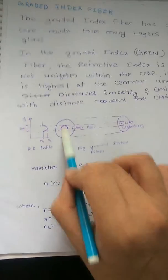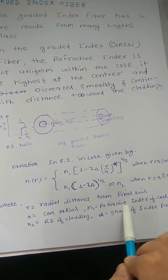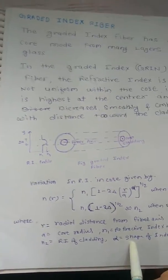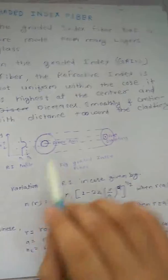n1 is the refractive index of core. n2 is the refractive index of cladding, and alpha is the shape of the index profile. So this is how this works.